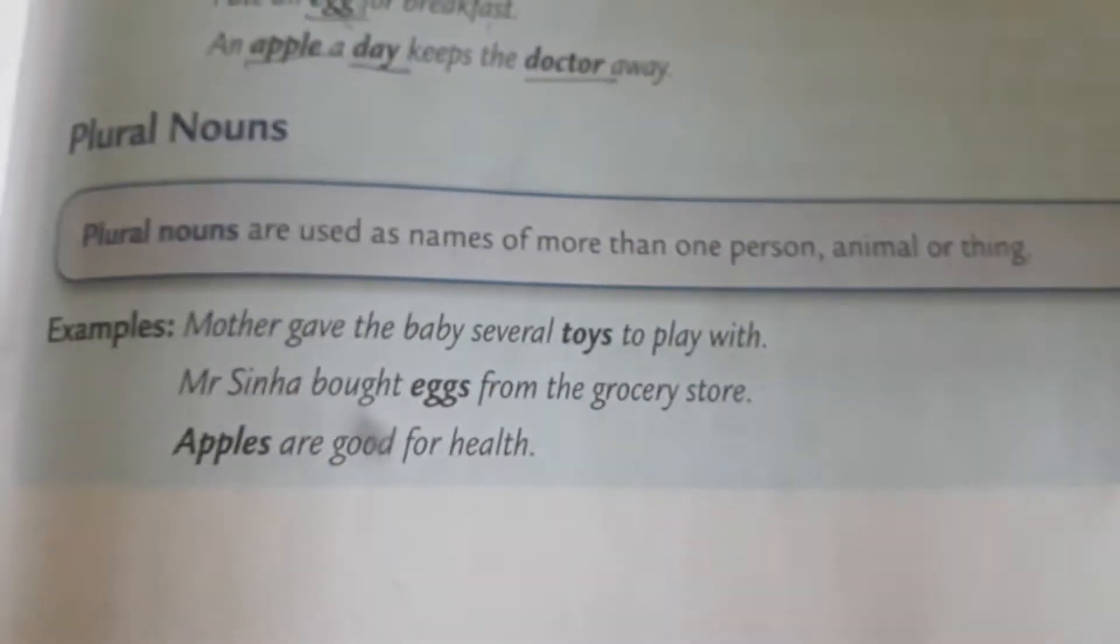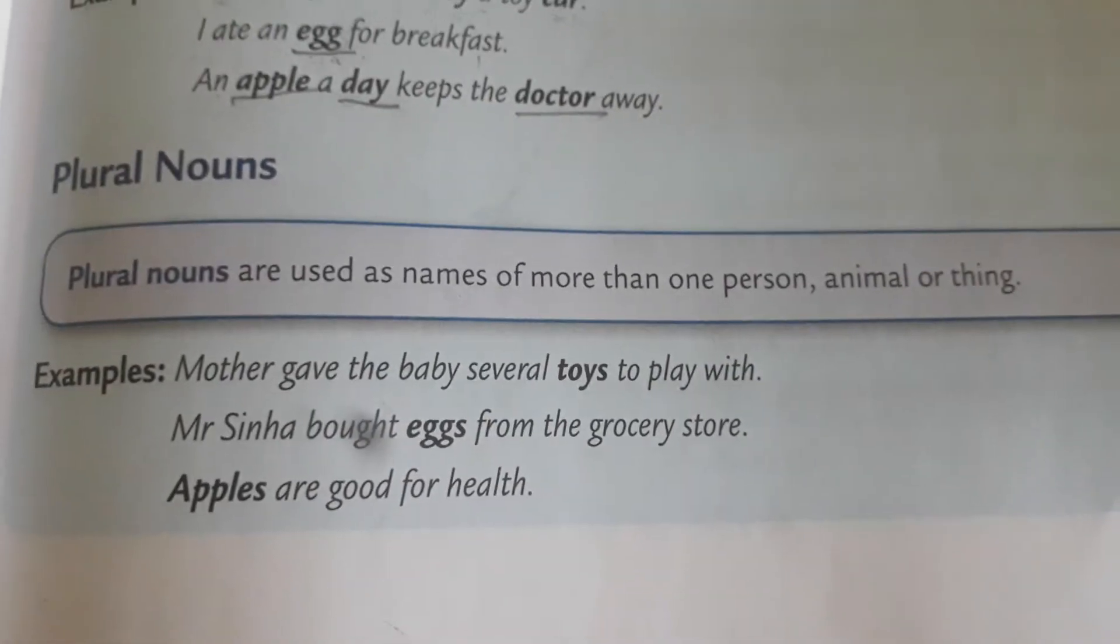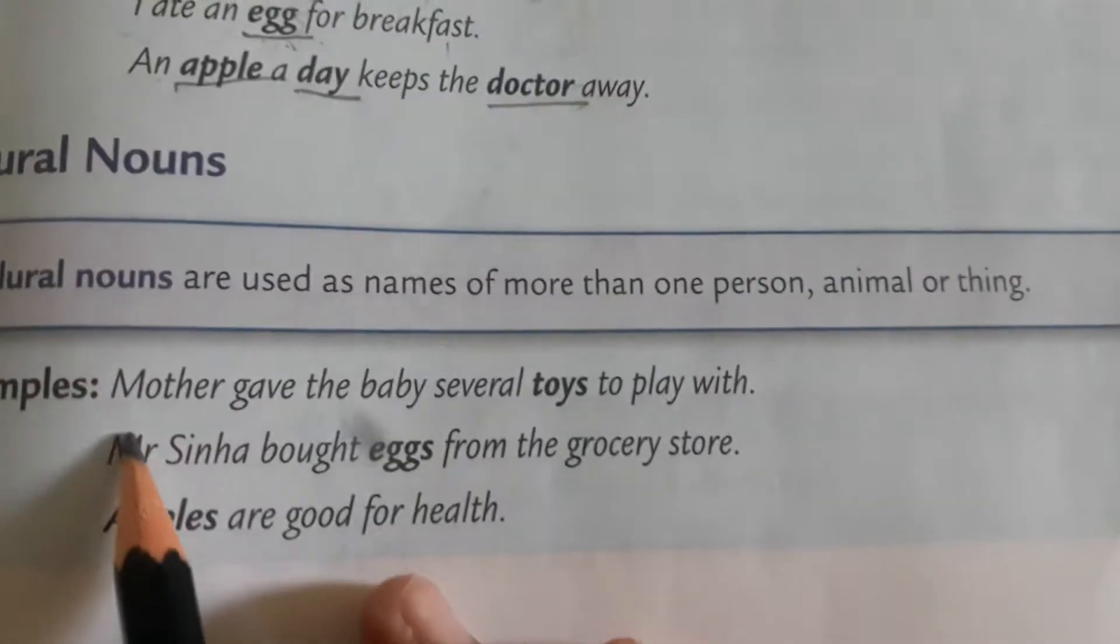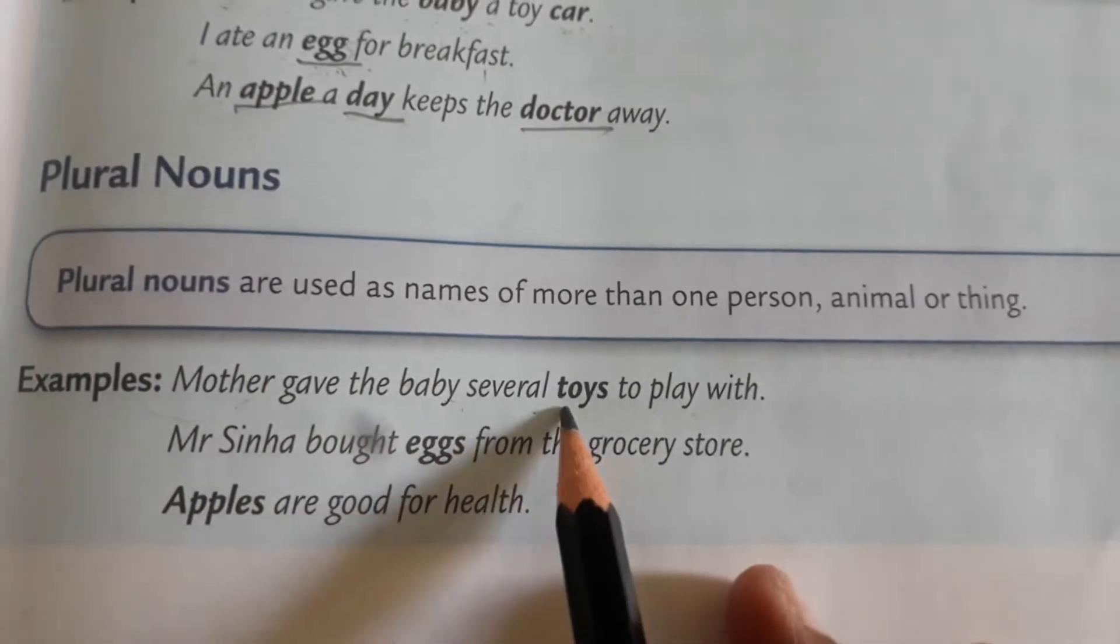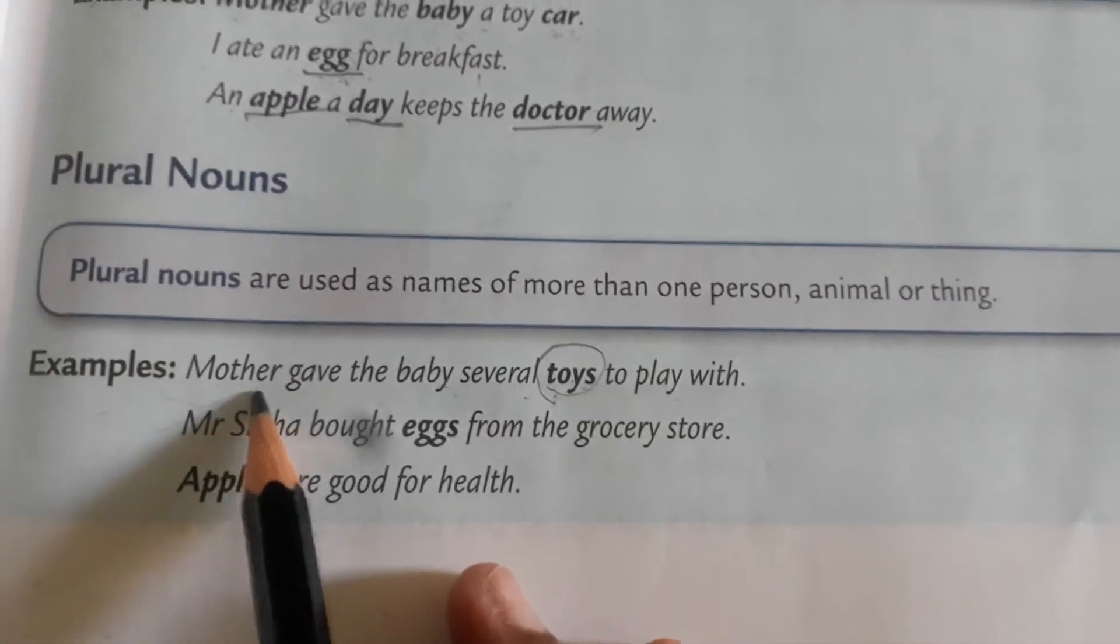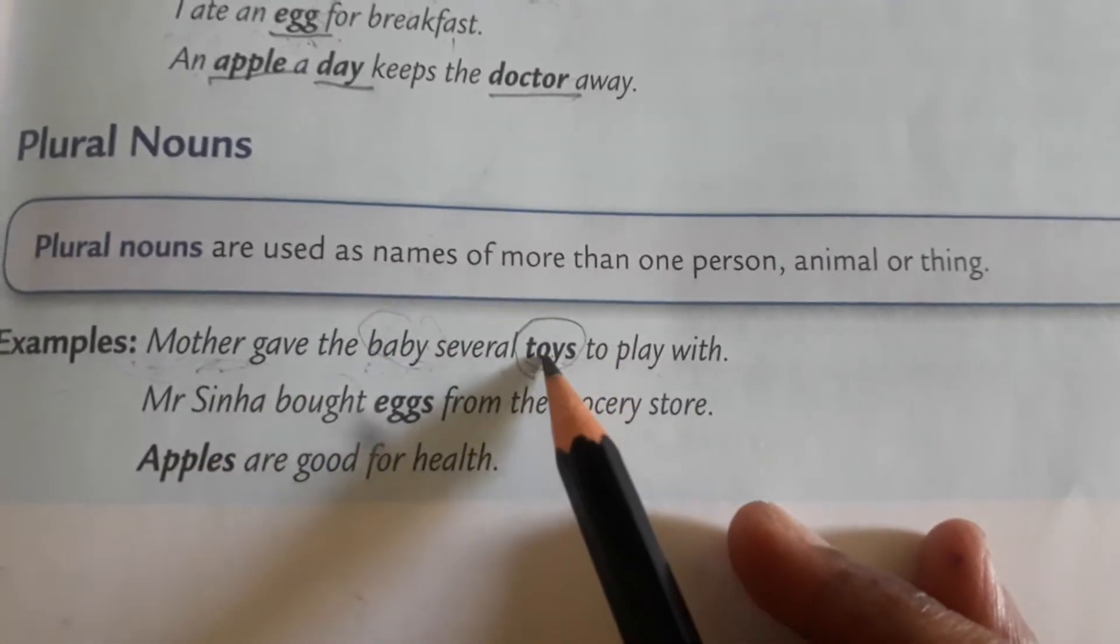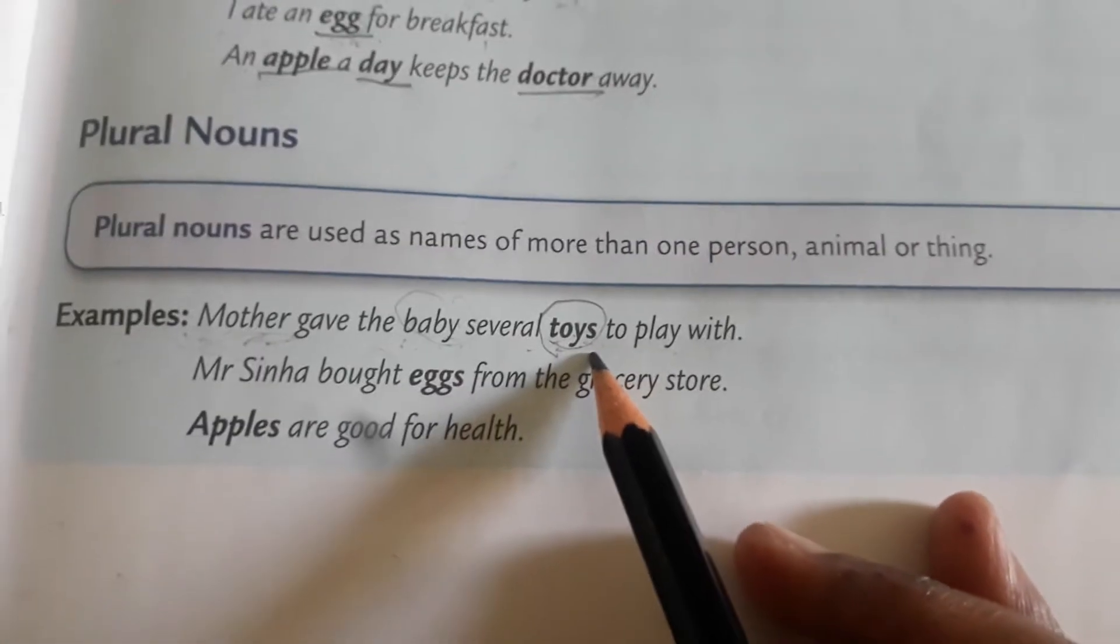Now come over here. Plural nouns. Plural nouns are used as names of more than one person, animal or thing. When we talk about more than one animal, person, or thing, that is called plural nouns. Mother gave the baby several toys to play with. Now come over here. There are three nouns, but what we are looking for is plural noun. And here it is toys, T-O-Y-S. Mother and baby are singular, one mother and one baby. And here only toy is written as toys, that means we are talking about more than one toy. So toys is an example of plural noun.